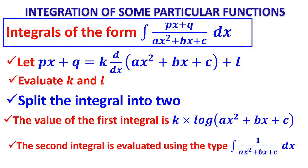So px+q = k·d/dx(quadratic) + l. Evaluate k and l, then split the integral into 2. The first integral is always k·log(denominator) because the numerator contains the differentiation of the denominator. The second one uses the method already seen for integrating with a quadratic factor in the denominator.